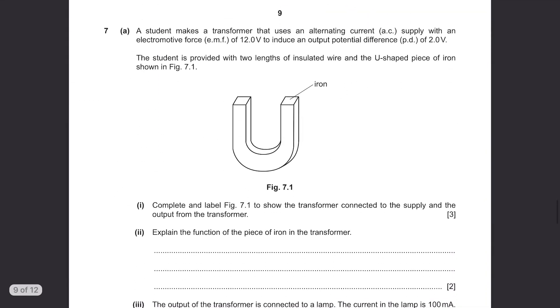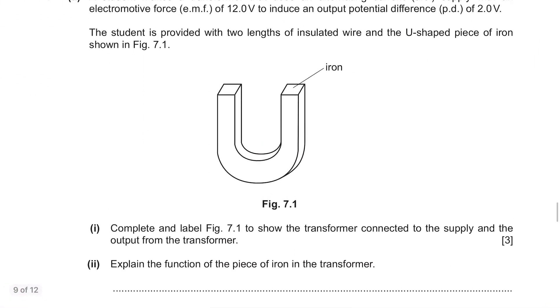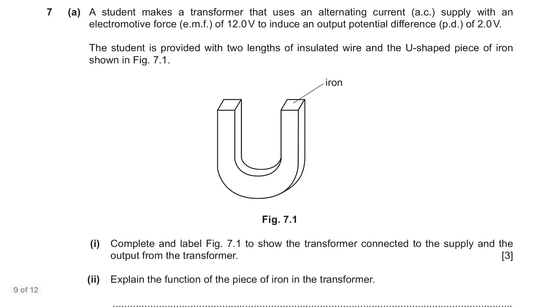Question 7, Part A. A student makes a transformer that uses an alternating current AC supply with an electromotive force EMF of 12V to induce an output potential difference of 2V. The student is provided with two lengths of insulated wire and the U-shaped piece of iron shown in figure 7.1.